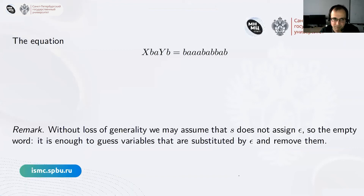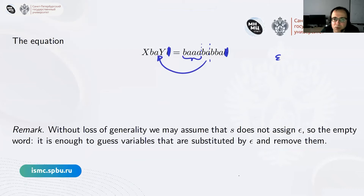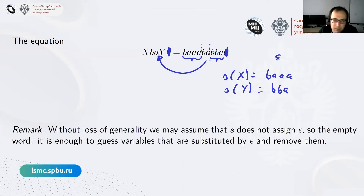For the last equation on this page, we can cancel a b, and if we exclude epsilon, the only thing we can do is identify the parts: s(x) = b a a a and s(y) = b b a. It's not so easy to give non-trivial examples of equations without a solution, but if the first letters are different on the two sides, then there is no solution.